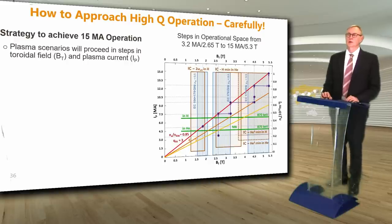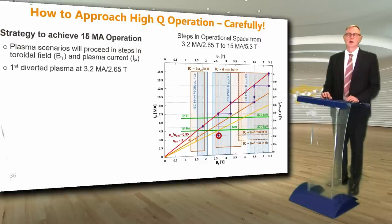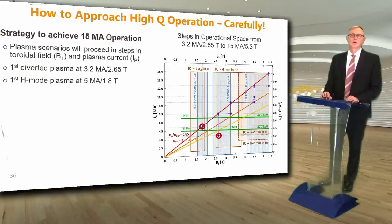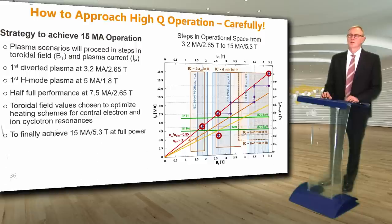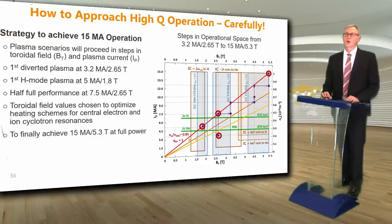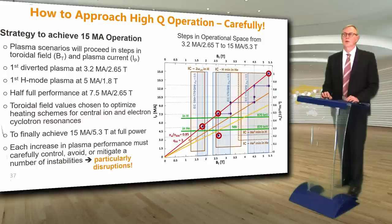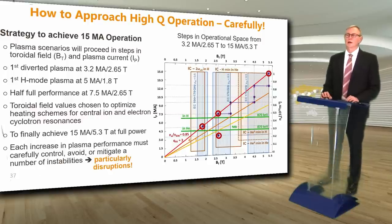How will we approach high-Q operation? Carefully. The ITER research plan describes a careful strategy to achieve high plasma performance operation up to a plasma current of 15 megamps. Plasma scenarios will proceed in steps in toroidal field and plasma current with key milestones at the first diverter plasma at 3.2 megamps and 2.65 tesla, the first H-mode plasma at 5 megamps and 1.8 tesla, and half full performance at 7.5 megamps and 2.65 tesla. Each increase in plasma performance must carefully control, avoid, or mitigate a number of plasma instabilities, particularly disruptions, which are the worst of the instabilities.